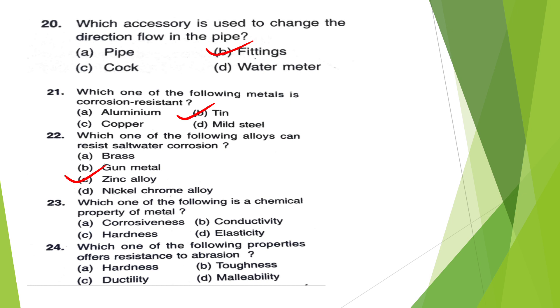24th question: Which one of the following is a chemical property of metals — Corrosiveness, Conductivity, Hardness, or Elasticity? The answer is option A — Corrosiveness.